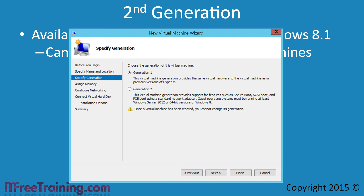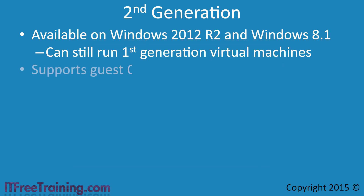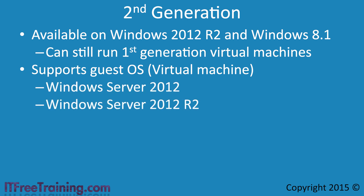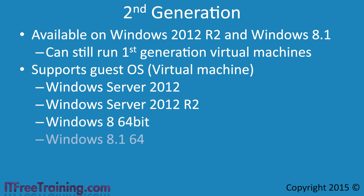Once selected, the generation cannot be changed later on. For guest operating system support, for the server operating system you need to use Windows Server 2012 or Windows Server 2012 R2. For client operating systems, Windows 8 or Windows 8.1 are supported. The operating system must be 64-bit — in a moment we will see why.